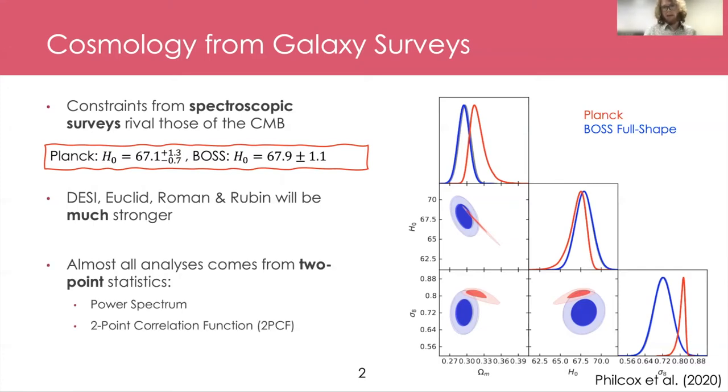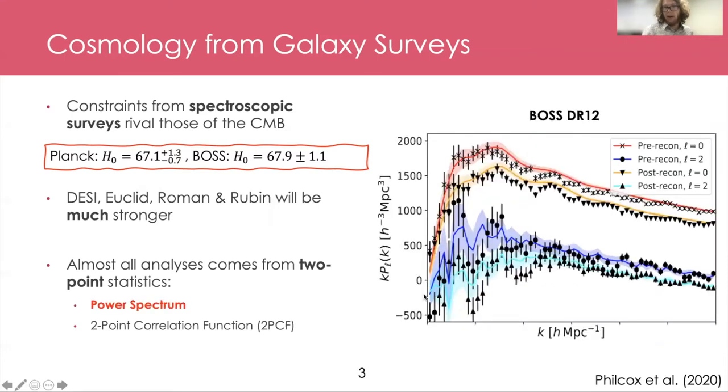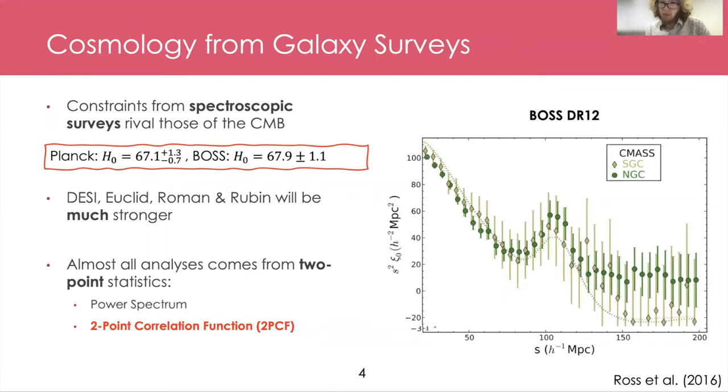So the current way of doing cosmology from galaxy surveys all focuses around two-point statistics. I mean one of two things, either the power spectrum or the two-point correlation function. The power spectrum, this is what it looks like for the BOSS galaxy survey. In red and blue here, I'm showing the power spectrum monopole and quadrupole, with the quadrupole showing the effects of redshift space distortions. And the yellow and light blue are showing here the effects of power spectrum reconstruction, which gives it a slightly more wiggly feel. Another way is to use the two-point correlation function of the galaxy density field. This is another measurement from BOSS. We can see kind of a broad feature of the correlation function, and this little bump around 100 megaparsecs, which is a signature of the BAO, just like the wiggles in the power spectrum.